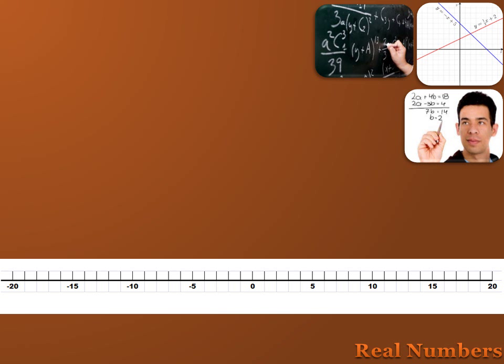If a number is not a real number, then it's an imaginary number — we'll talk about imaginary numbers in a later lesson. Imaginary numbers can't be plotted on a number line, but any real number can be. For instance, I can plot 7, minus 9, 14.75, or minus 17.5. So if you can put it on a number line, it's a real number.